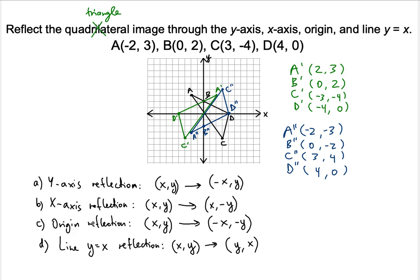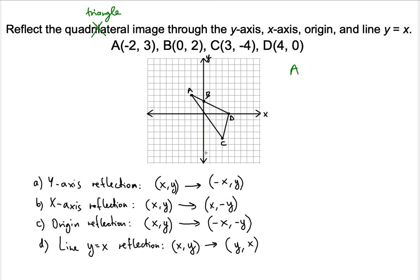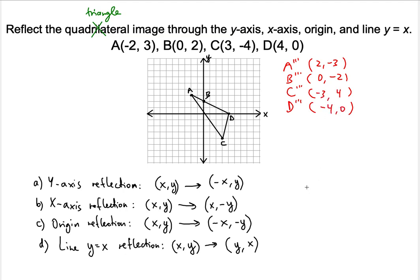Now let's talk about origin reflection. I'm going to erase all the work we've done because it'll look very messy. So let's talk about the origin reflection, naming them A triple prime, B triple prime, C triple prime, D triple prime. The origin reflection negates both x and y, so we have to negate everything: negative 2 comma 3 becomes 2 comma negative 3; 0 comma 2, zero is not affected, becomes 0 comma negative 2; 3 comma negative 4 becomes negative 3 comma positive 4; and 4 comma 0 becomes negative 4 comma 0, unaffected.